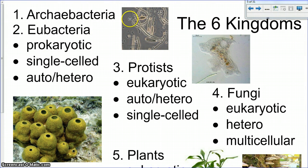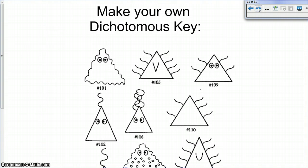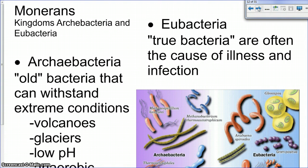So the Monerans are going to be prokaryotic, single-celled, and they can be auto or heterotrophic. So moving on to our Monerans. The Monerans are basically any type of bacteria. The eubacteria are considered to be the true bacteria. They are usually the ones that cause some type of illness or infection, like Staphylococcus or Campylobacter.